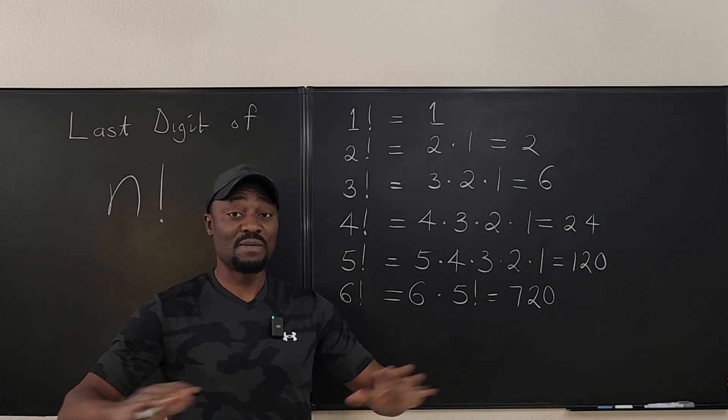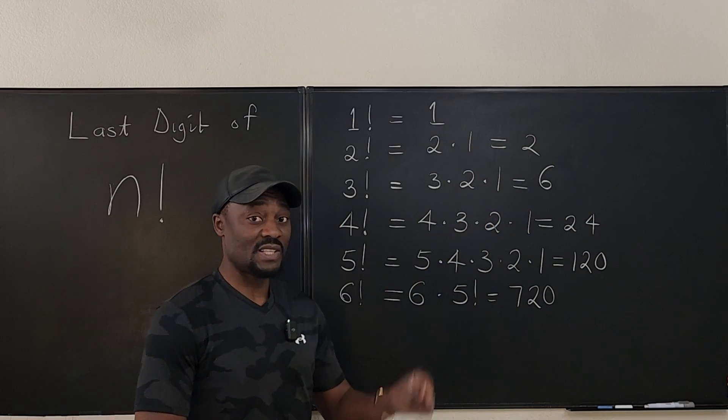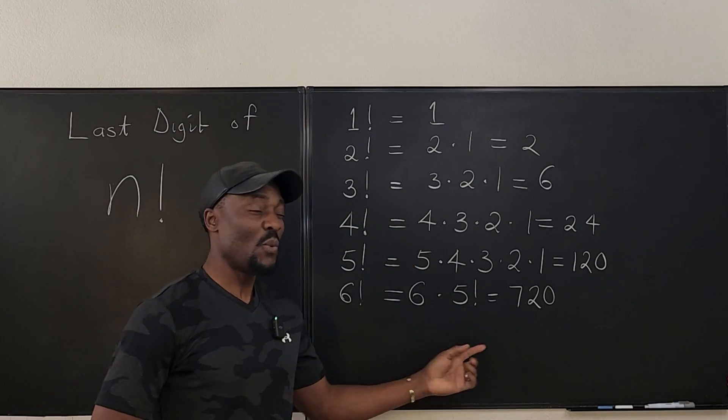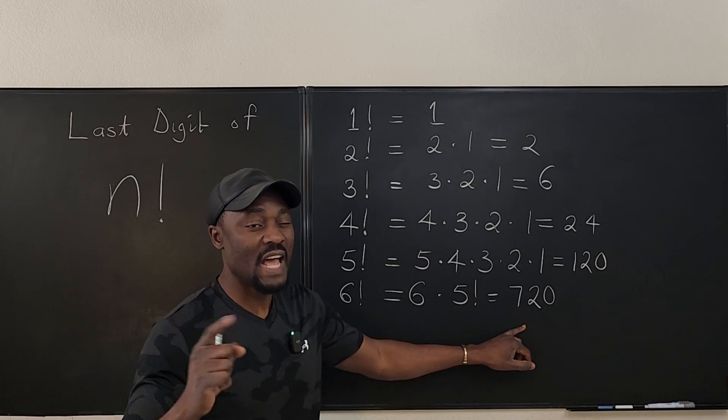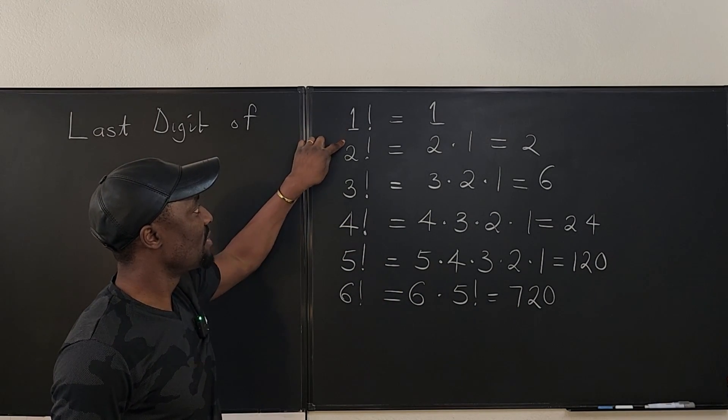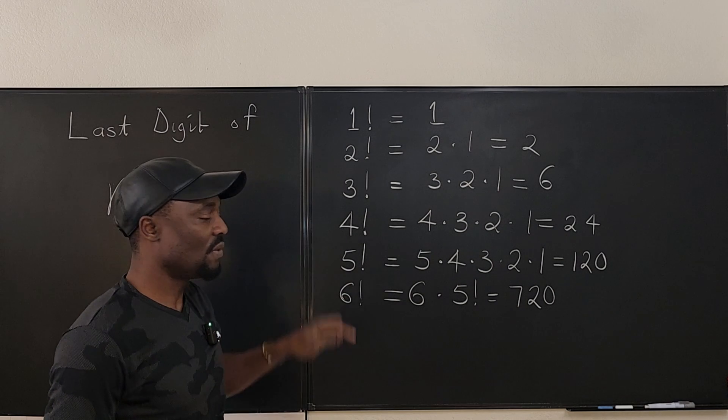So generally, every factorial you compute such that n is a natural number, the last digit will be zero, unless the number is one of these numbers: one, two, three, or four.